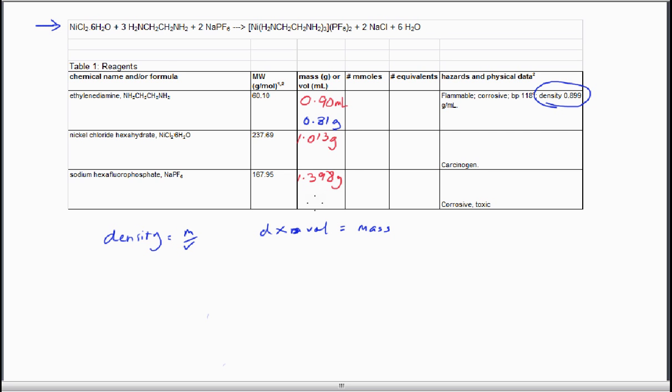The next column is the calculated number of moles. In fact it's in millimoles—notice that extra M there. Moles is calculated by the mass divided by the molecular weight, and to get to millimoles we multiply by 1,000. In this case, the number of moles of ethylenediamine is 0.81 divided by the molecular weight of 60.10 times 1,000, and that gives us 13 millimoles.